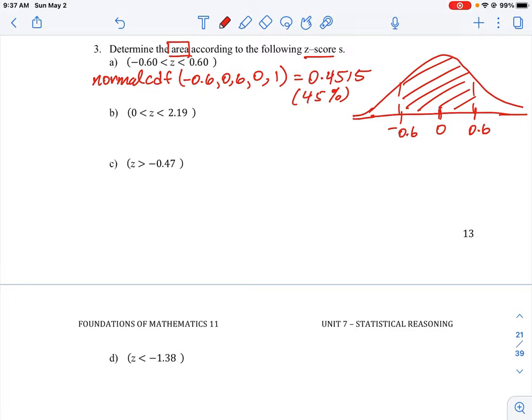And then to do the only one here that's a little different, we have question C because we're not given a lower limit. So what this question really is, we draw the curve, we can mark that in at zero. We're looking at all values greater than negative 0.47. So that means everything to the right of that lower boundary.